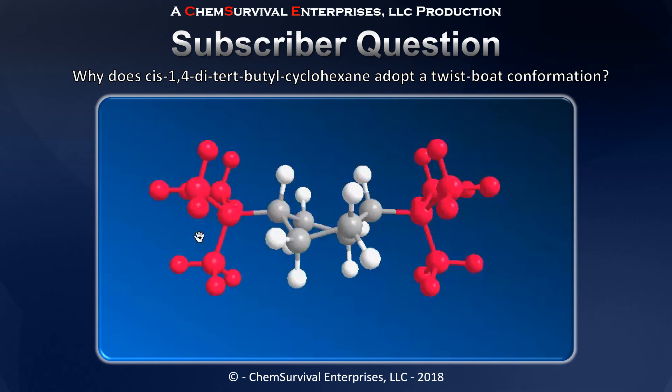Even though the twist boat ring itself is energetically less favorable than a chair, in this case going into a twist boat conformation is a penalty the molecule is willing to pay because it gets even more of an energetic benefit by getting those t-butyl groups out in space where there are no significant steric clashes. I hope this answered your question about why cis-1,4-di-t-butyl cyclohexane adopts the twist boat conformation. Thanks for watching everyone — I'm Professor Davis from ChemSurvival.com, and as always I'll see you in my next video.